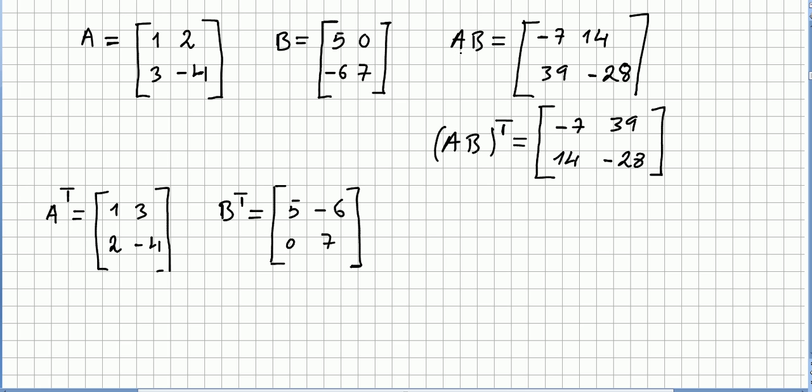So what is A times B? A times B will be 1 times 5 minus 12, so that's -7, 14, 39, and -28.